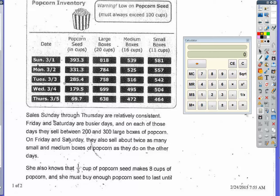One-third of a cup of seed makes 8 cups of popcorn. Since there are three-thirds in a whole cup, one cup of seed equals 24 cups of popcorn. Three times eight is 24, so one cup of seed makes 24 cups of popcorn.